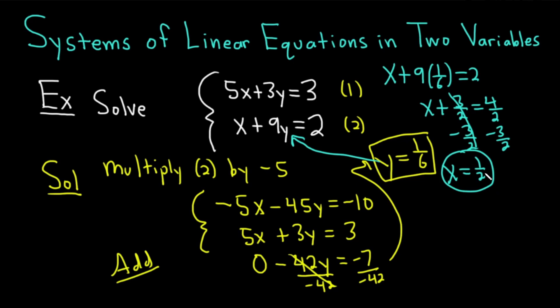And so the answer would be x equals 1 half, y equals 1 sixth. Or even better, you could write it as a point: 1 half comma 1 sixth. What does this mean? This is where these two lines intersect. Each of these equations graphically can be represented by a line in the xy plane. And this ordered pair in the xy plane is the point where these two lines meet or intersect. Let's do a couple more examples.